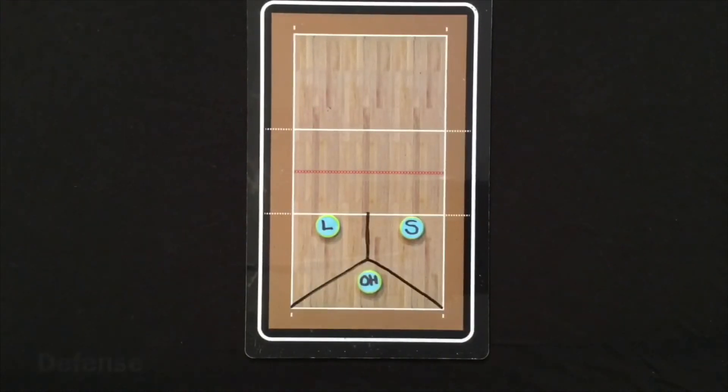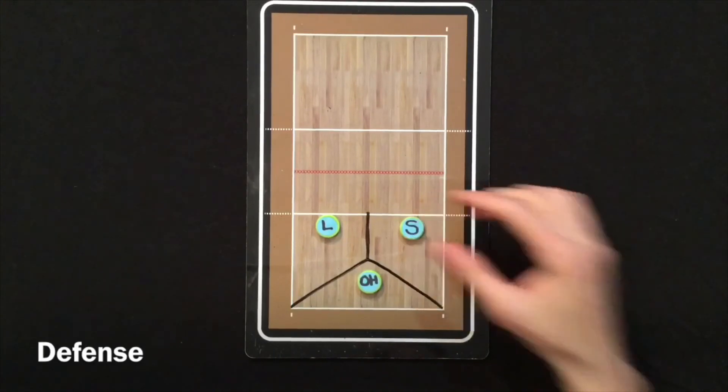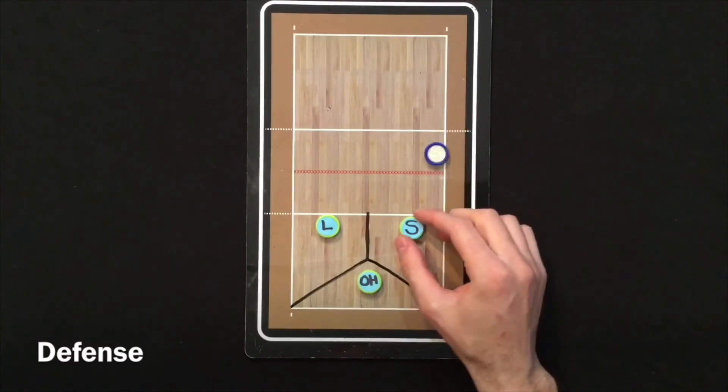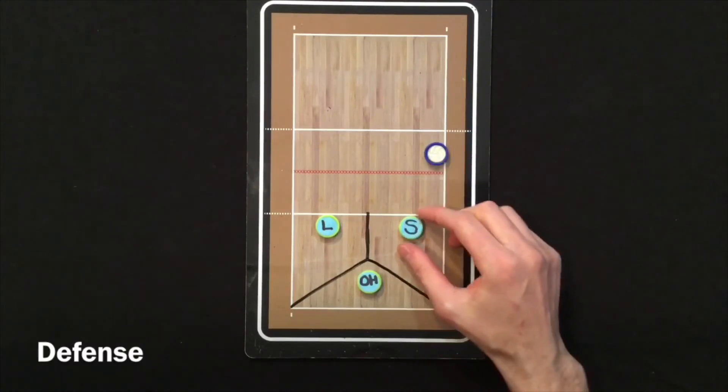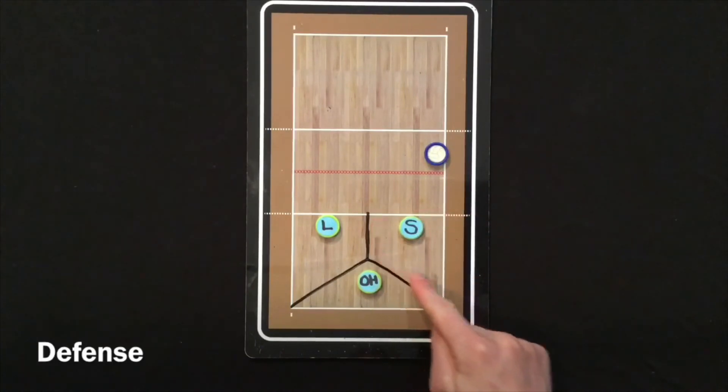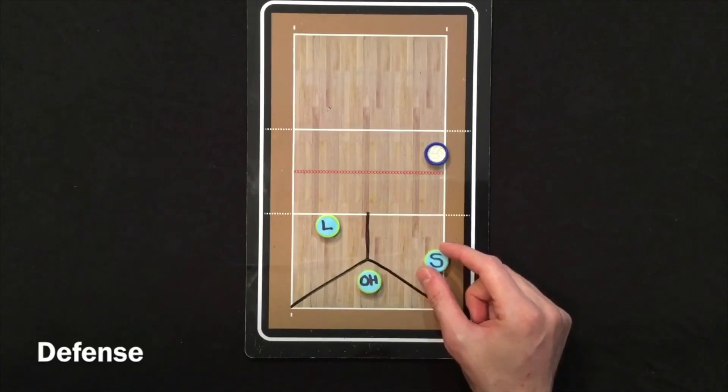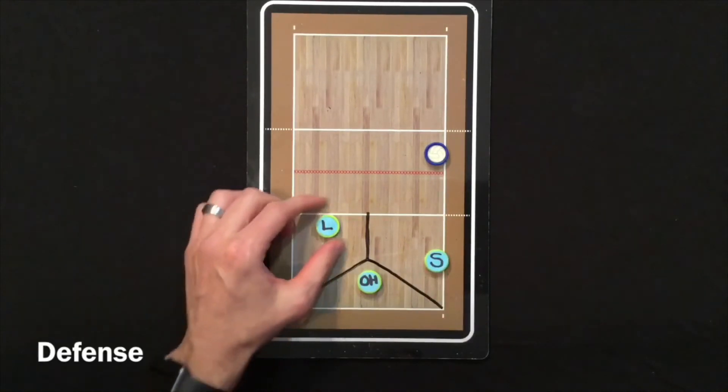So when playing defense we need to get from base to defense. If the other team is hitting it from the outside hitter spot here, we need to make sure we're dropping and driving. We don't want to stay in base. We're a little bit too close to defend and most of our area is behind us. So we want to drop and drive, trying to make sure our foot is on the sideline as well as drop and drive here.